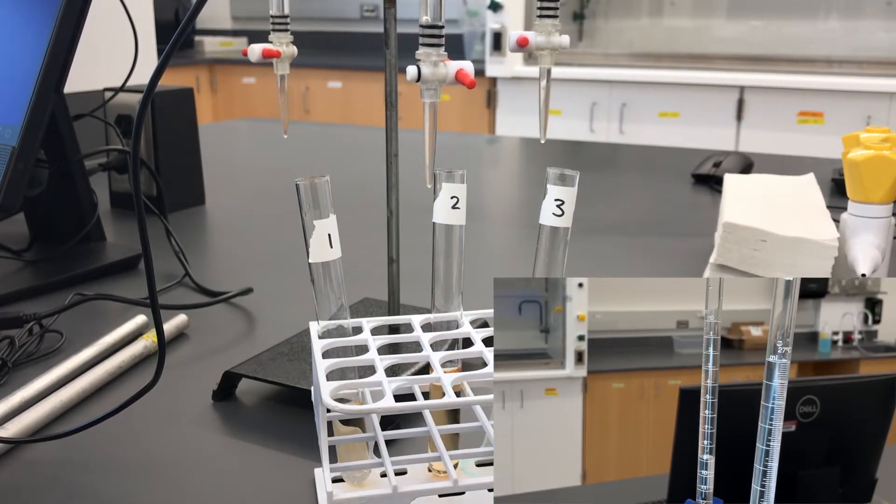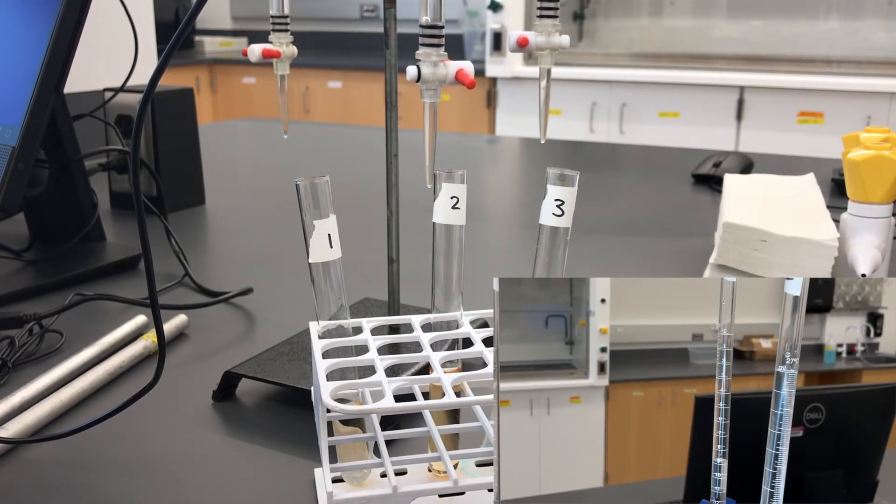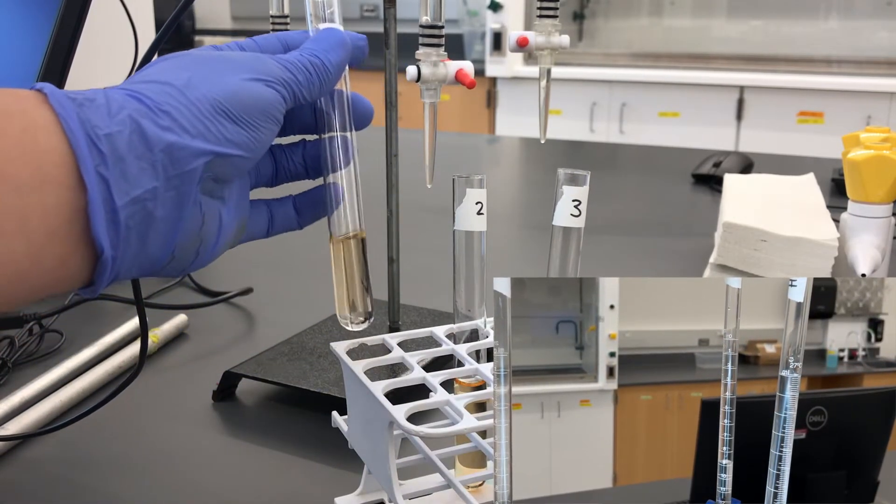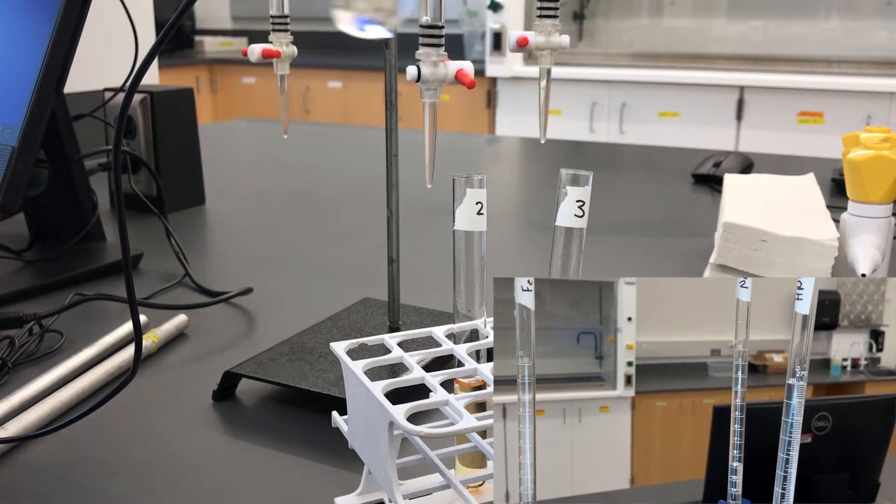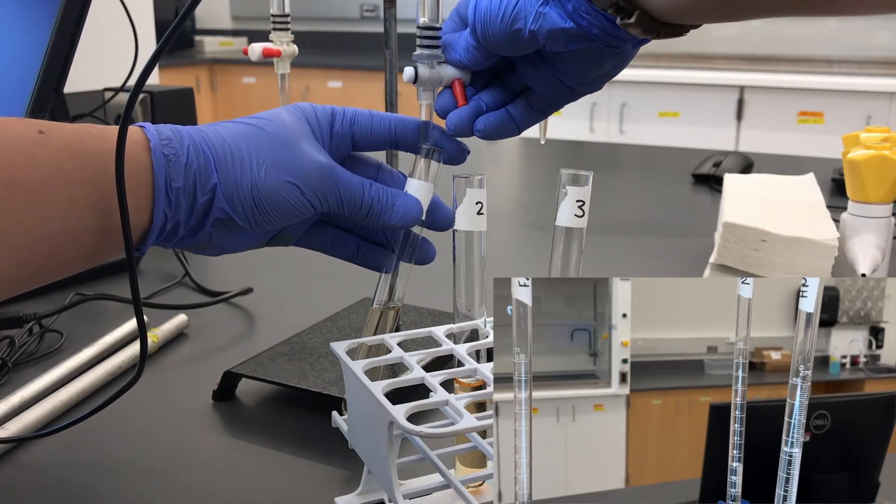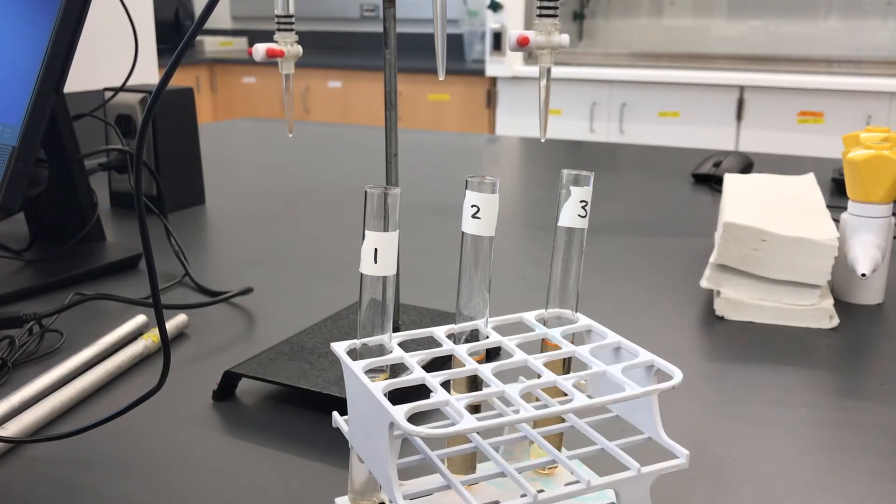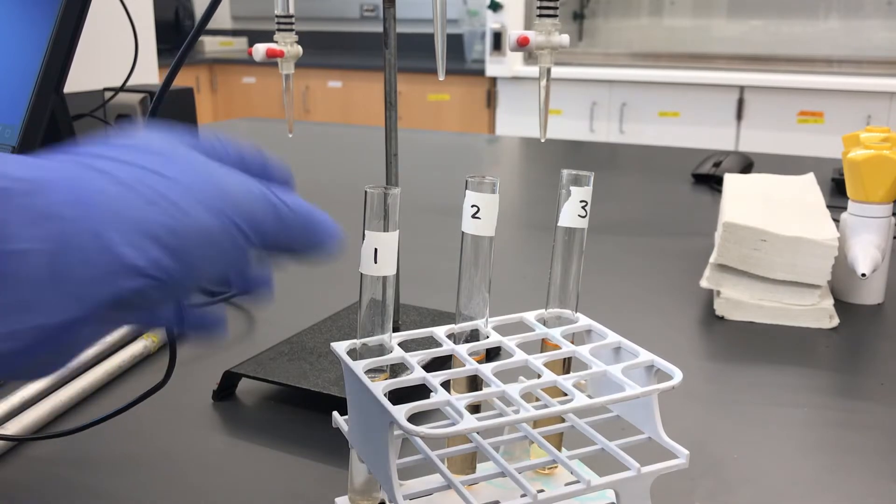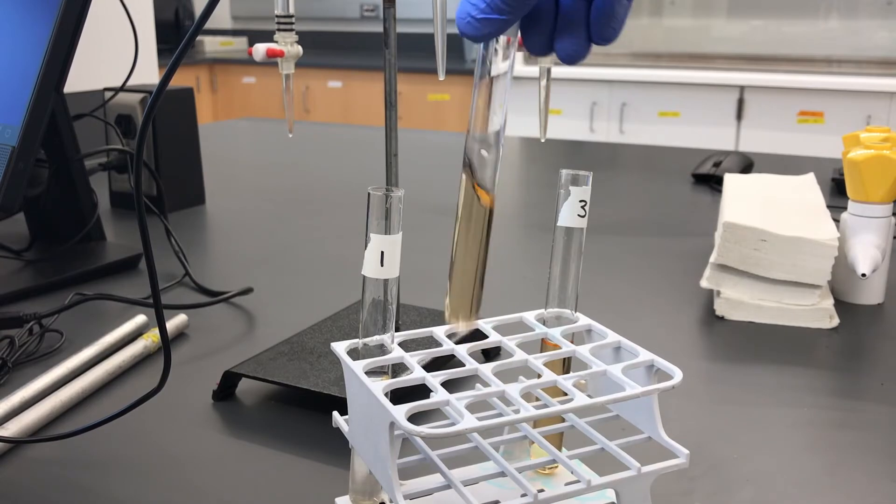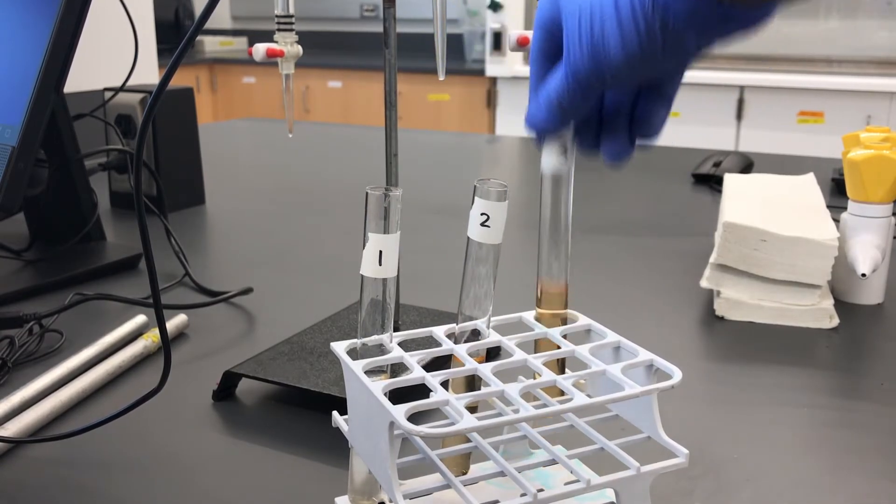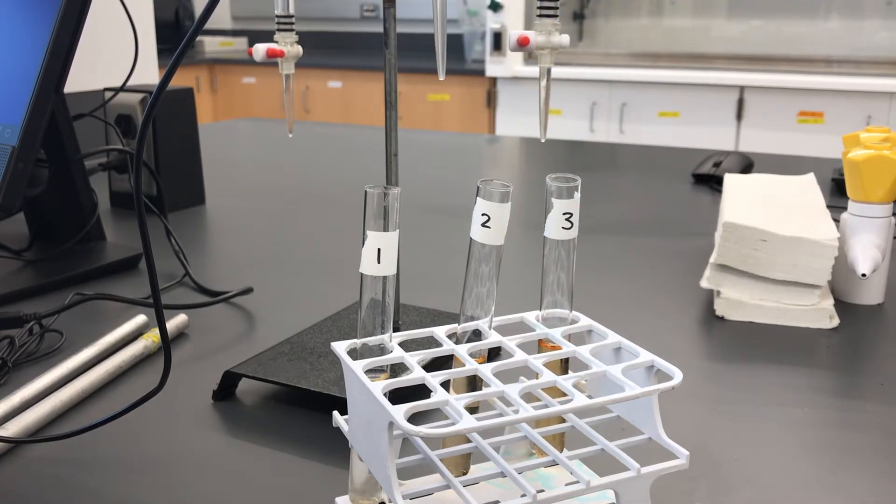The last reagent we need to add is the nitric acid, which we'll add in reverse increments of two milliliters. So, the first one, since they got the least amount of the sodium thiocyanate, we'll get the most amount of the nitric acid. So, it'll get four mils. The third one, well, that one doesn't get any nitric acid. And then, we can give them all just a real quick stir. And then, it'll be back to the spectrophotometer.